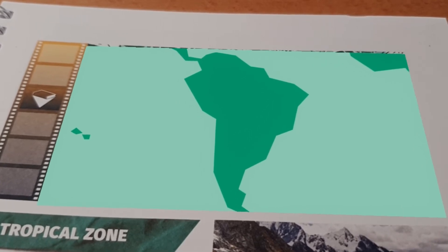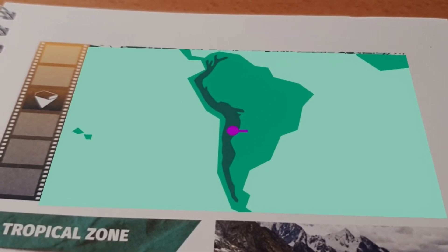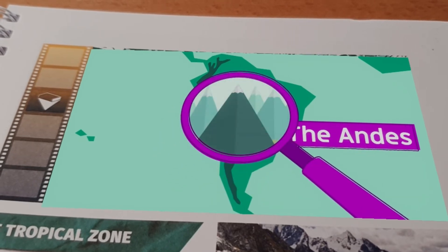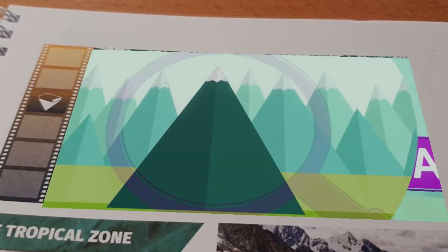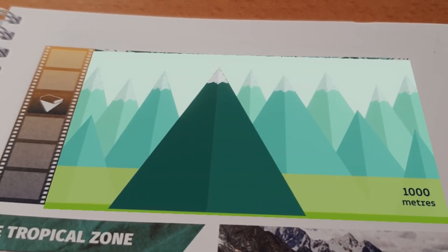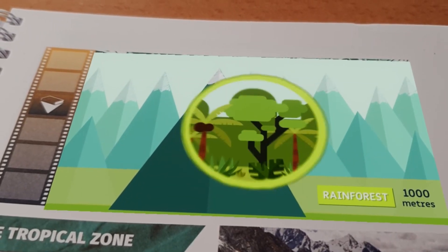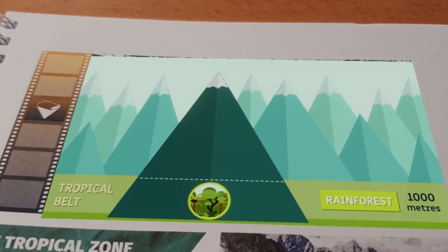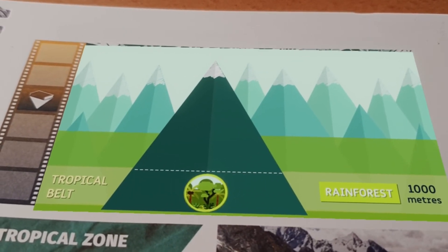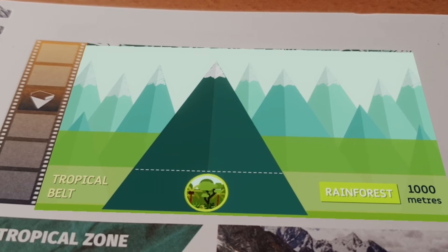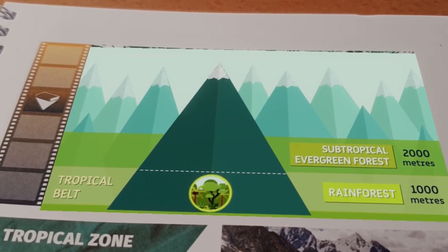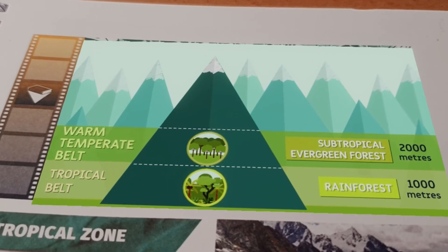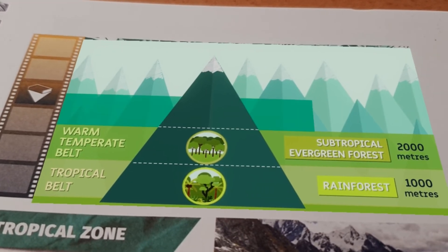In tropical high mountains, like the Andes, all belts of altitudinal zonation can be found. From its base to 1,000 meters above sea level, the vegetation is dominated by rainforest. Subtropical evergreen forests grow from 1,000 meters to 2,000 meters. This is called the warm-temperate belt.